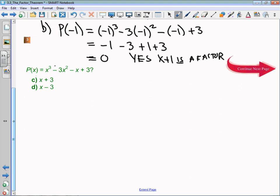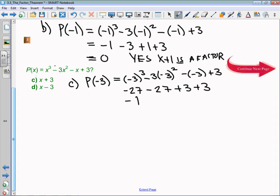For part c, to check if x plus 3 is a factor, I'm going to check the polynomial at negative 3. That's negative 3 cubed minus 3 times negative 3 squared minus negative 3 plus 3. Negative 3 cubed is negative 27, then minus 27, plus 3, plus 3. This ends up being negative 54 plus 6, so that's negative 48. Because P of negative 3 does not equal 0, x plus 3 is not a factor.